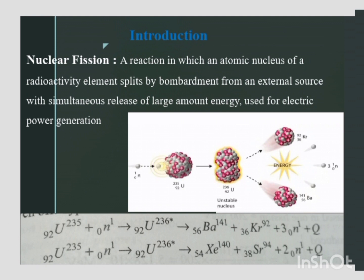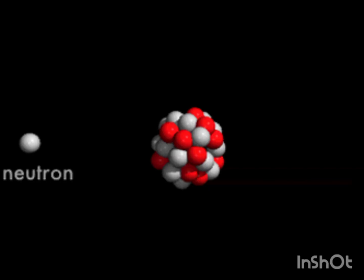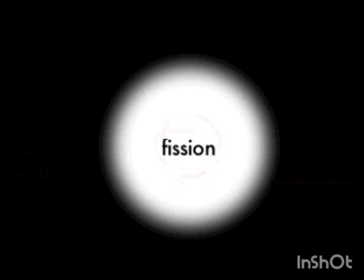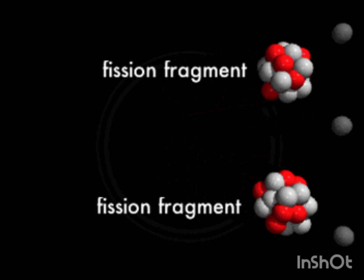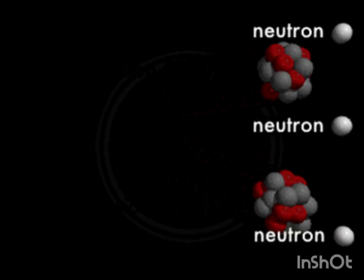What is nuclear fission? The process of breaking up of the nucleus of a heavy atom into two more or less equal fragments, with the release of a large amount of energy, is known as fission. When the uranium nucleus is bombarded with neutrons, the nucleus splits into two nearly equal parts and neutrons are also released in this process.